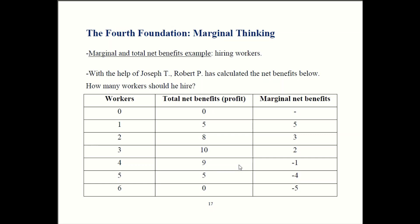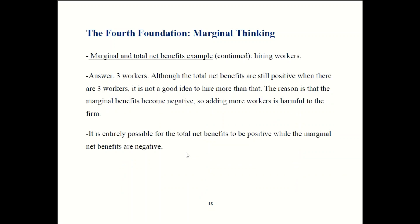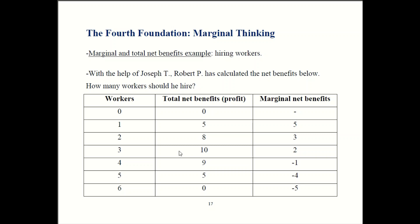The optimal number of workers to hire is three. With three workers you get a profit of ten, which is the biggest possible profit the firm could get. You can find it by looking at the profit column, but there's an equivalent way that focuses on the marginal net benefits. The rule is that whenever the marginal net benefits are negative, that's when you want to stop hiring. Marginal benefits are negative for the fourth worker, so you don't hire a fourth worker. And likewise you don't want to hire a fifth worker because negative marginal net benefits drag your profit down from nine to five.